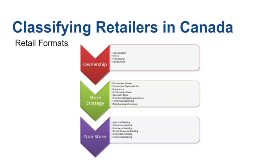We could also classify stores by their store strategy, ranging from a convenience store at one end of the extreme. A convenience store provides the place function, the time function, and the form function, all very close to the customer — right next to them, available at a time they want, 24 hours a day, 7 days a week, providing convenience-type products that people buy on a fairly regular basis.